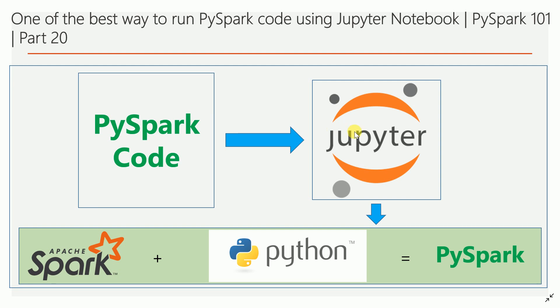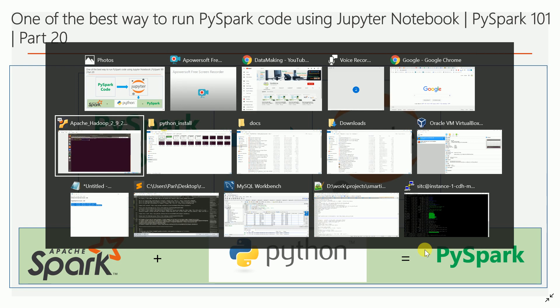You can actually launch a Jupyter notebook by typing the PySpark command in the shell, which will open the Jupyter notebook and you can write PySpark code — when you run it, it will go and run on the Spark environment. One good advantage is that with the result of your PySpark code, you can actually build a visualization in the notebook itself.